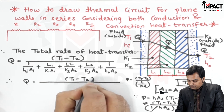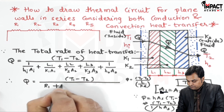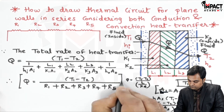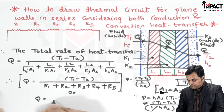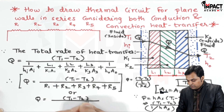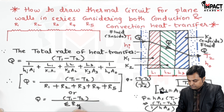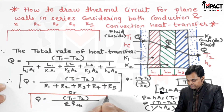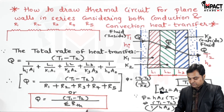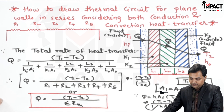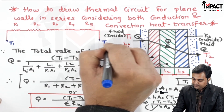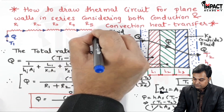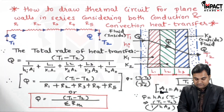So Q = (T1 − T2) / (R1 + R2 + R3 + R4 + R5). In general form, Q equals the temperature difference divided by the summation of all thermal resistances. This means for walls in series with both conduction and convection, we have the temperature difference in the numerator and the total thermal resistance in the denominator. The thermal circuit has T1 on one side and T2 on the other, with heat flowing through all five resistances in series.